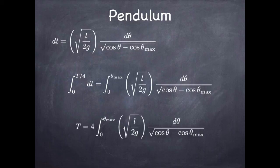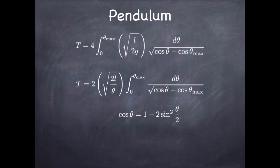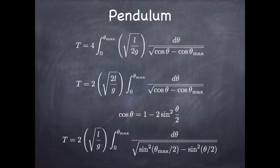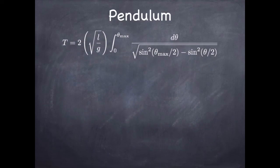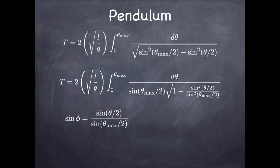This isn't written in the standard form, so we'll recast it. We notice that cosθ = 1 − 2sin²(θ/2), so we rewrite the cosines in that way and get squares of sines. Then we replace θ with a different variable of integration: factor out sin(θ_max/2) and define sinφ = sin(θ/2) / sin(θ_max/2). Notice that's what shows up in the square root — 1 − sin²(θ/2)/sin²(θ_max/2) — so the square root turns into √(1 − sin²φ) = cosφ.